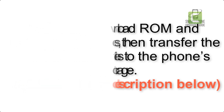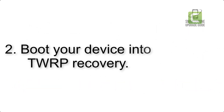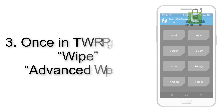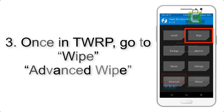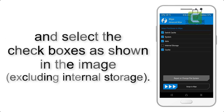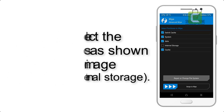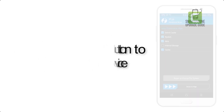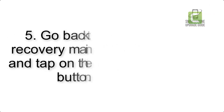Step 2: Boot your device into TWRP recovery. Once in TWRP, click on Advanced Wipe and select the checkboxes as shown in the image, excluding internal storage. Step 4: Swipe the button to wipe the device.